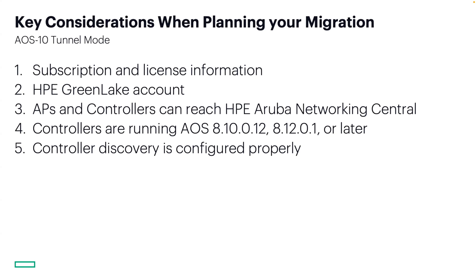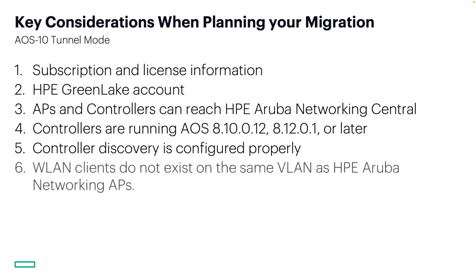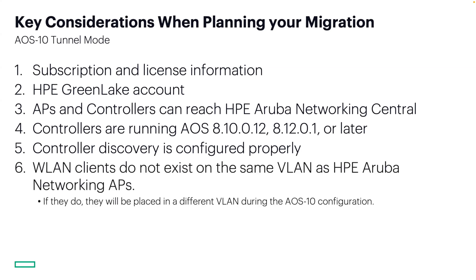This helps prevent APs from becoming stranded if they reboot and start searching for the IP address of the first MC while you are in the middle of upgrading to AOS 10. Last on this list, make sure campus AP management interface and wireless tunnel mode clients do not reside in the same VLAN. If they do in AOS 8, make sure they're moved to a different VLAN before AOS 10 configuration is done.